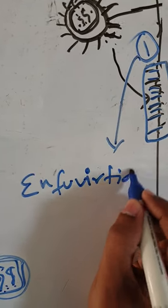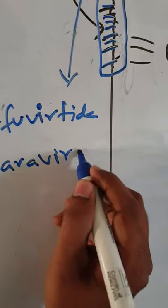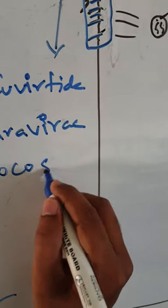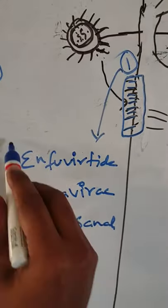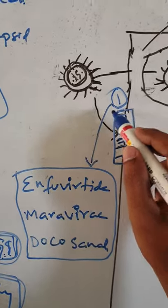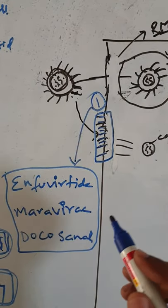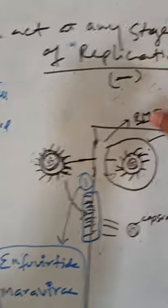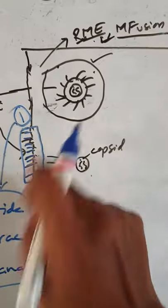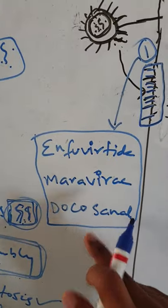Drugs that inhibit the attachment phase include enfuvirtide, maraviroc, and docosanol. These drugs inhibit the binding or attachment of the virion to the host cell, blocking the very first step of the replication process.